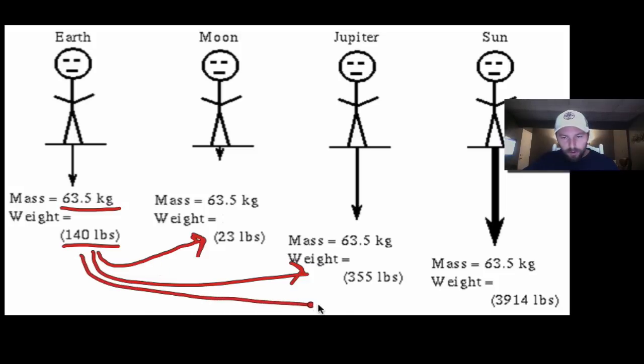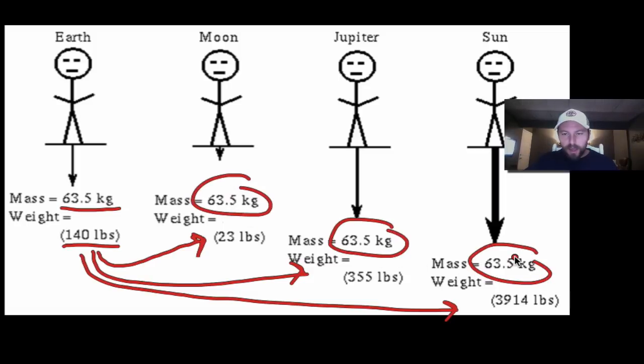Take that person, go all the way over to the Sun, and that person that weighs 140 pounds on Earth would weigh almost 4,000 pounds on the Sun. So gravity has a huge effect on the person's weight, but no effect on their mass. Notice that the mass stayed the same at all locations.